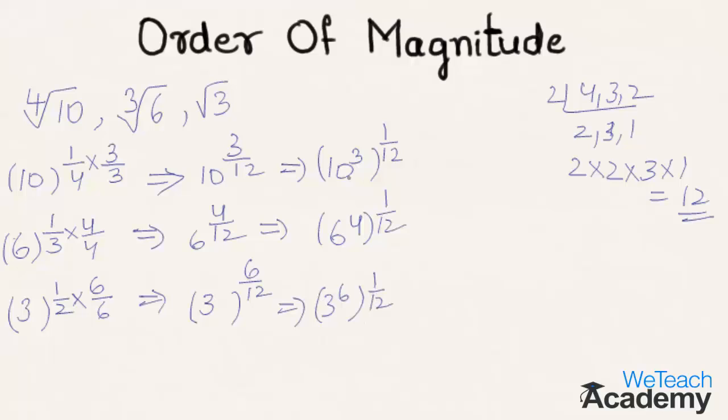This is nothing but 12th root of 10 cube, that is nothing but 1000. In the next surd we get 12th root of 6 raised to the power 4, that is nothing but 1296. And here we get 12th root of 3 power 6, that is nothing but 729.